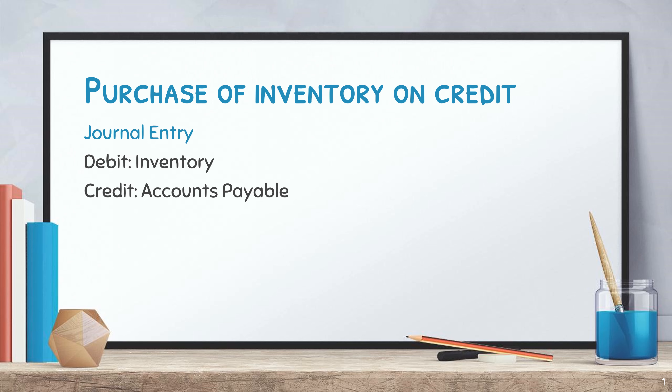As you can see on the whiteboard, the journal entry to record the purchase of inventory on credit is as follows: debit inventory and credit accounts payable.